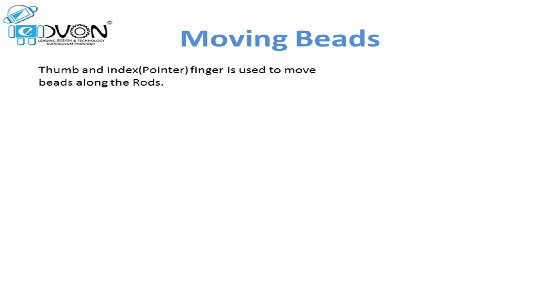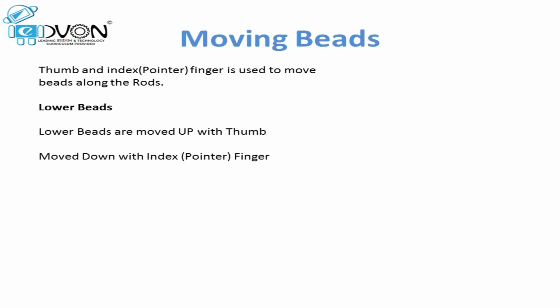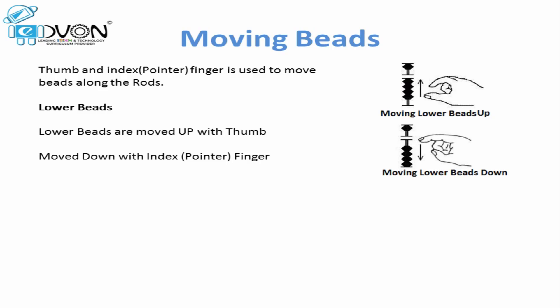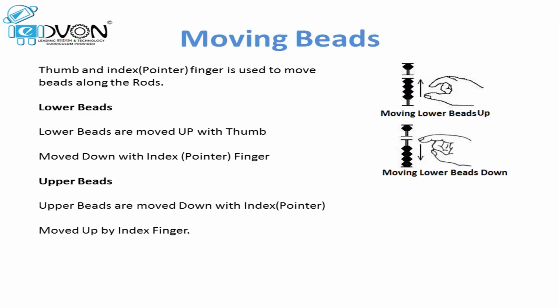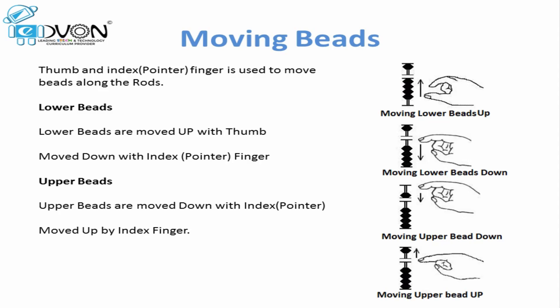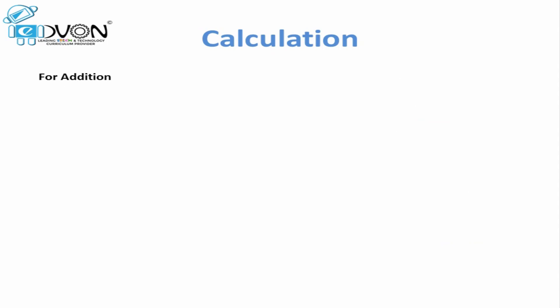We use thumb and pointer to move beads up and down on abacus. For lower beads, we always use the thumb to move lower beads up and we always use the pointer to move lower beads down. For upper beads, we use the pointer to move them down and we use the pointer to move them up.